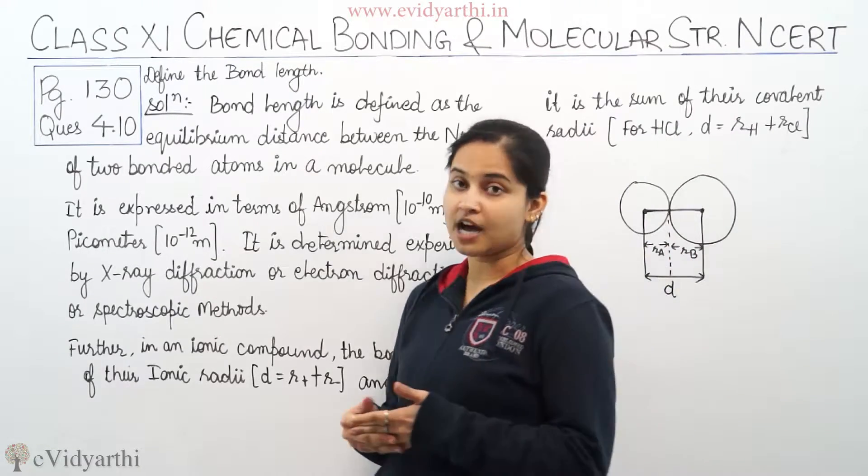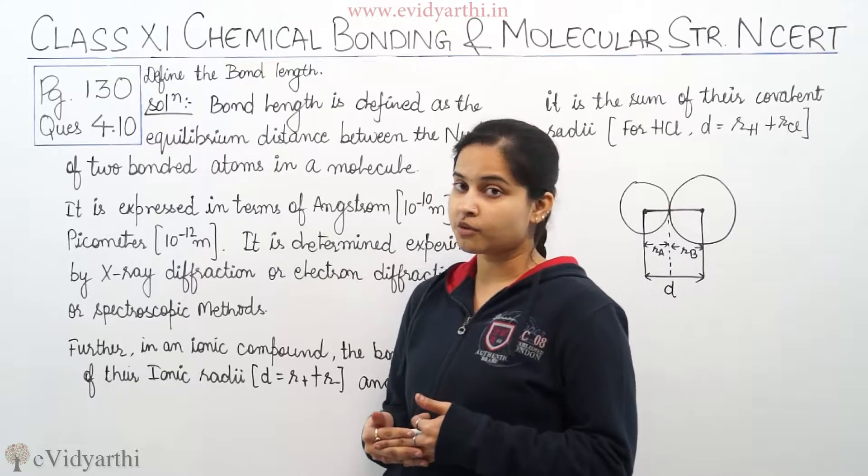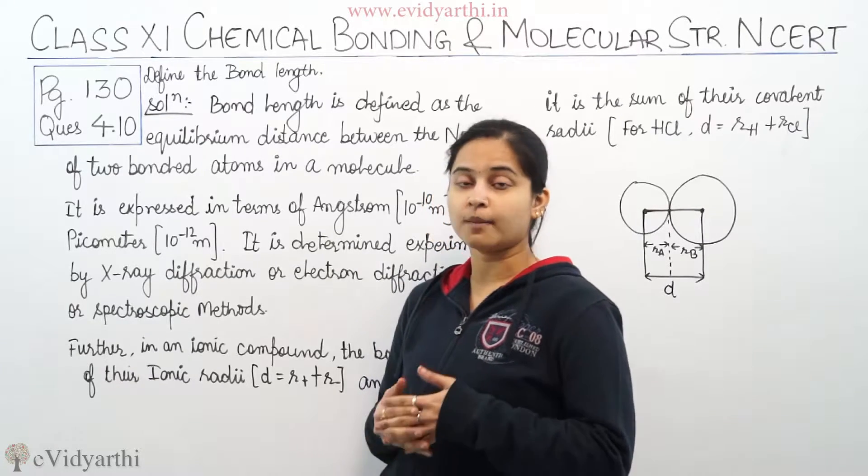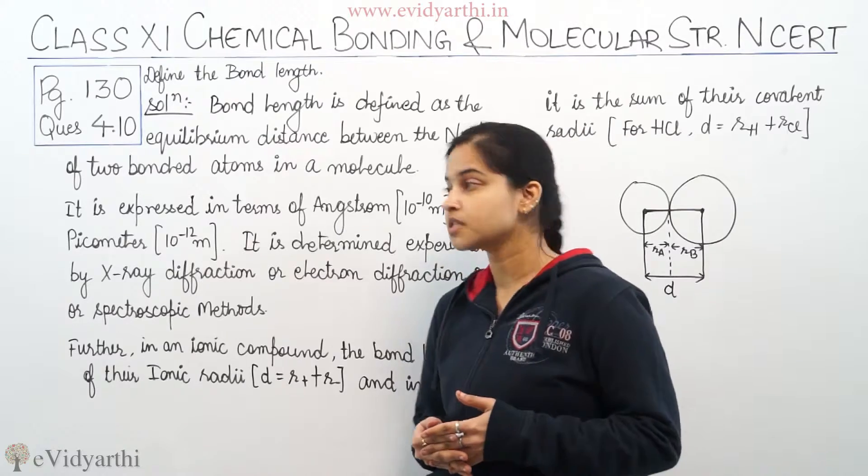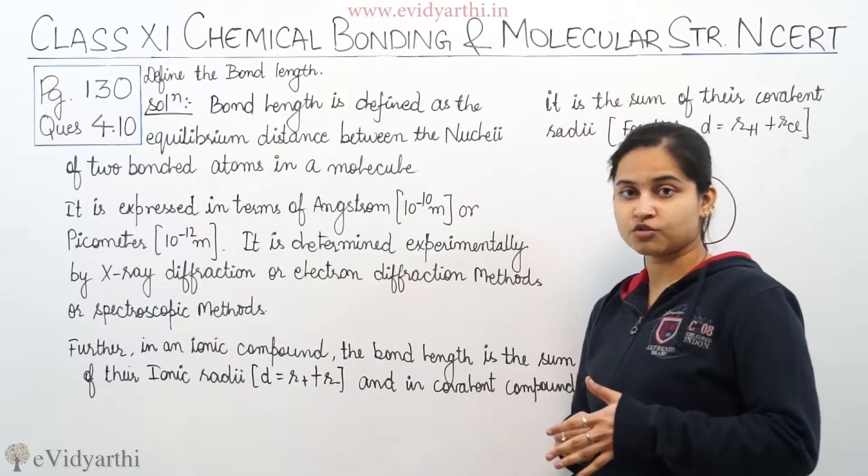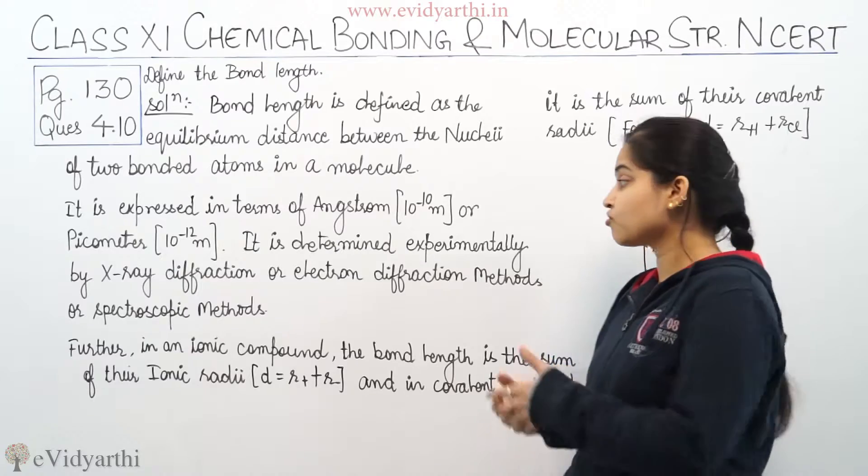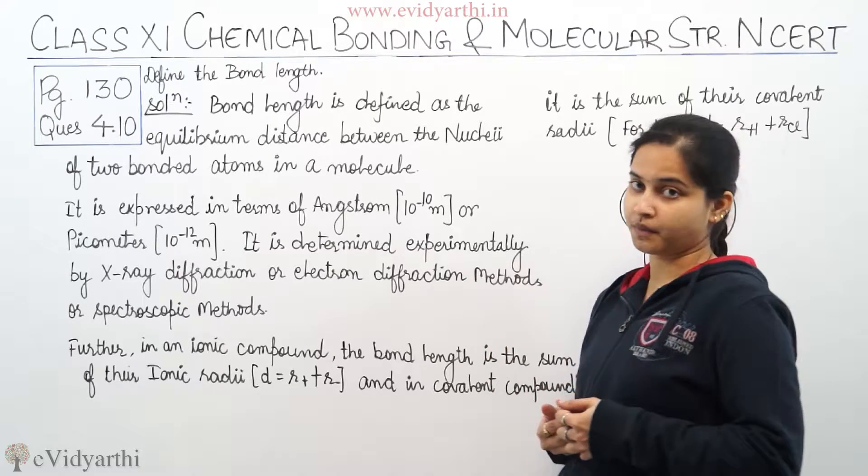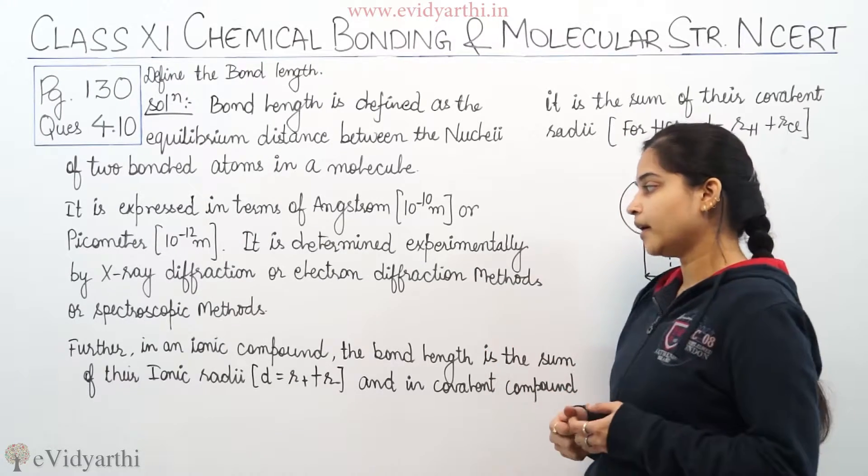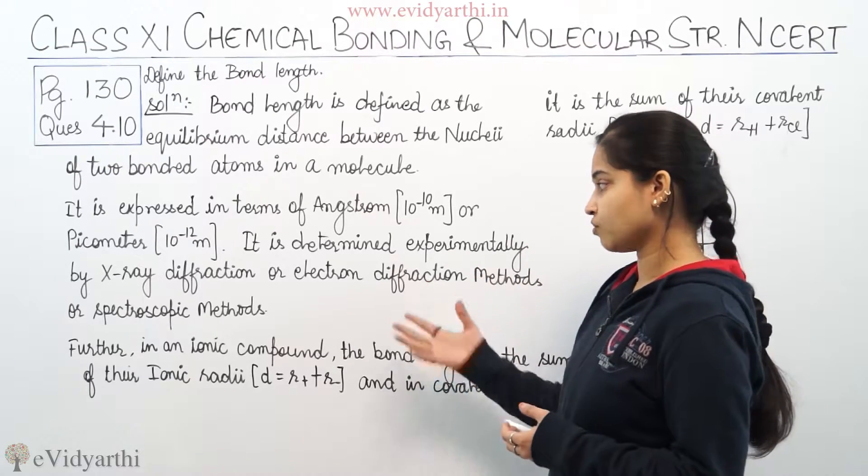Bond length is expressed in terms of Angstrom which is equal to 10^-10 meter or picometer which is 10^-12 meter. It is determined experimentally by X-ray diffraction methods, electron diffraction methods or spectroscopic methods. So you can see over here, whatever I spoke, it is written on the board.